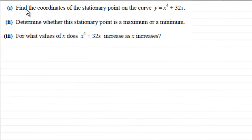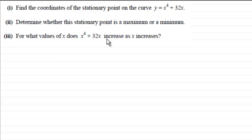In this question we've got to find the coordinates of the stationary point on the curve y equals x to the power 4 plus 32x, then determine whether that stationary point is a maximum or a minimum, and finally find for what values of x does x to the power 4 plus 32x increase as x increases. If you'd like to try it, pause the video now; otherwise let's go through the worked solution.